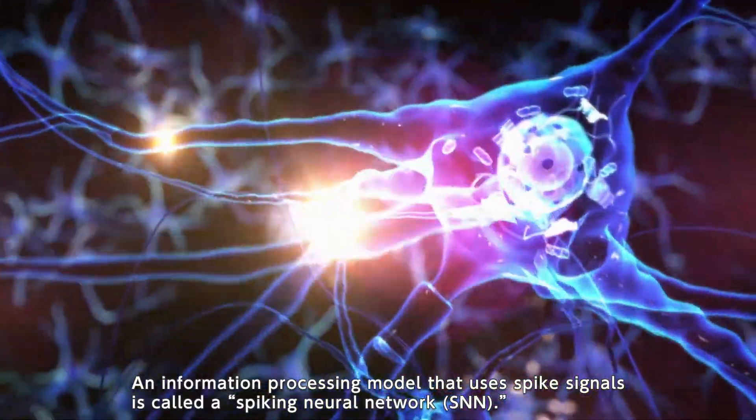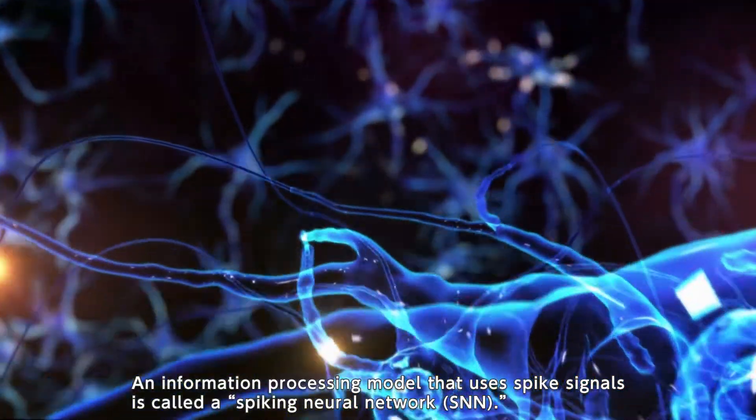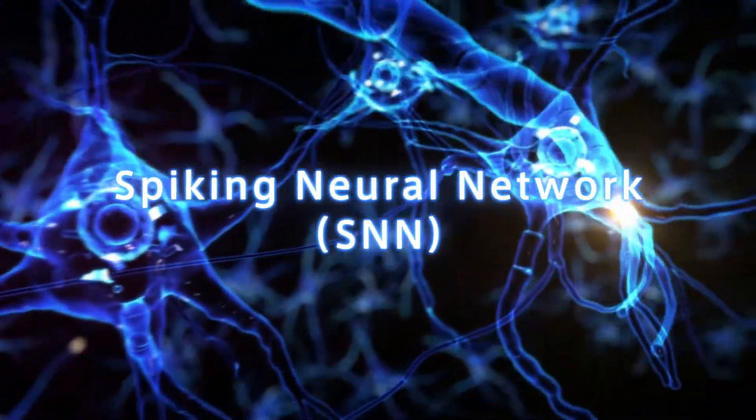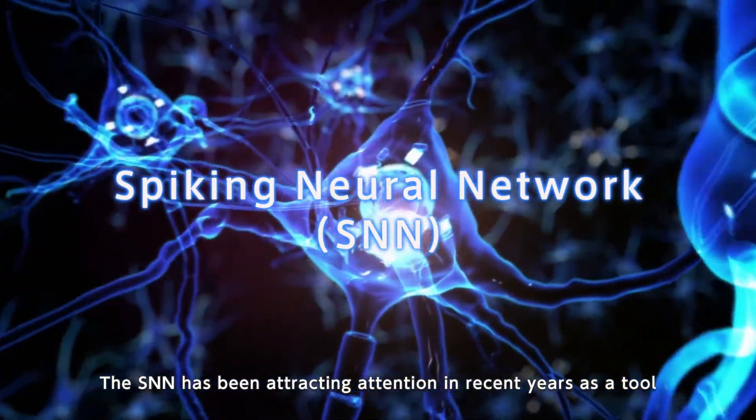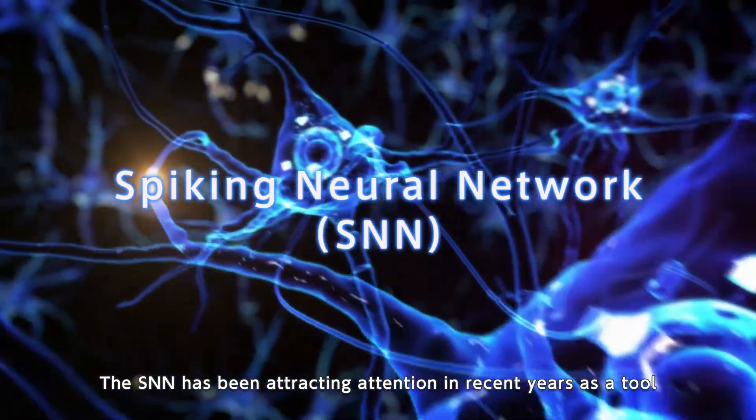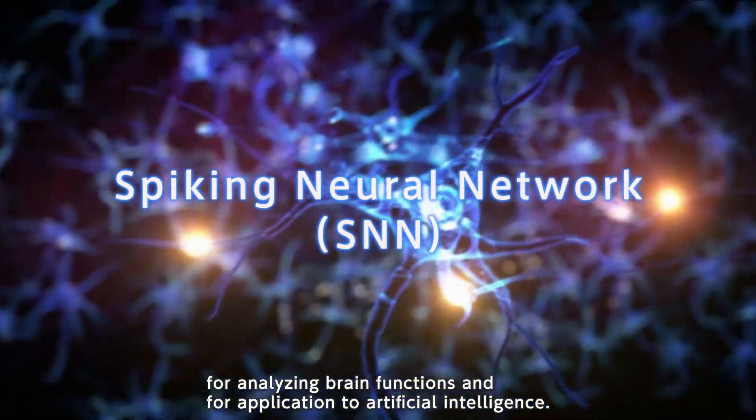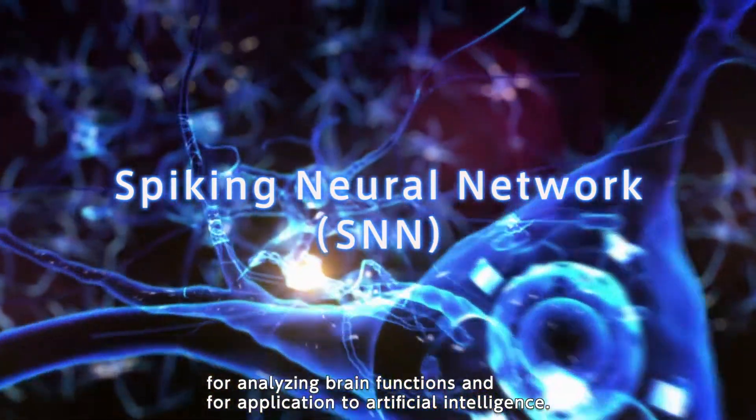An information processing model that uses spike signals is called a spiking neural network. The SNN has been attracting attention in recent years as a tool for analyzing brain functions and for application to artificial intelligence.